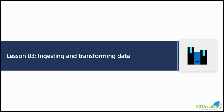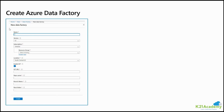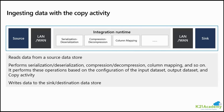Now coming to lesson number three, where we talk about ingesting and transforming data. In this lesson we cover how to set up data factory, ingest data using copy activity, and transform data with mapping data flow. While creating data factory you provide the name, version 2 is default, subscription, resource group name, location, and you can enable Git configuration later. When the copy activity runs behind the scenes, data is read from the source and written to the sink, with serialization and deserialization, compression, decompression, column mapping, and so on — all based on the configuration given as part of the input and output dataset.